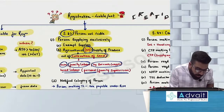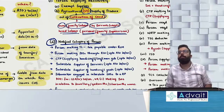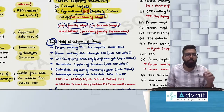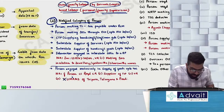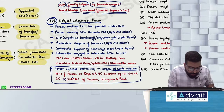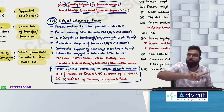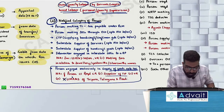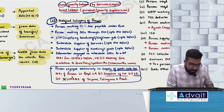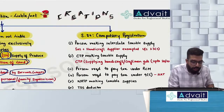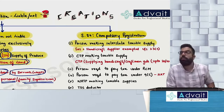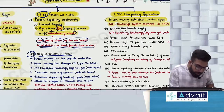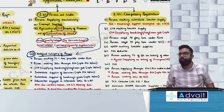Section 23 also covers the notified category of people who are exempted. Under section 23(2), the government has the power to notify people who will be exempted from registration. This includes persons engaged in supplying goods up to 40 lakh — which we have already read with section 22 — and also suppliers of tobacco, ice cream, paan masala, and voluntary registration seekers, as already explained.